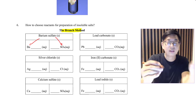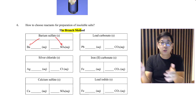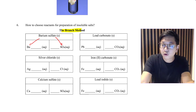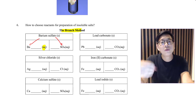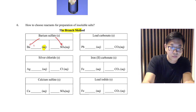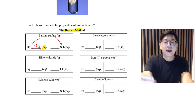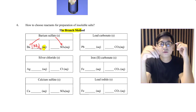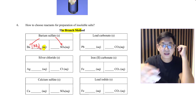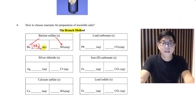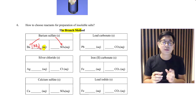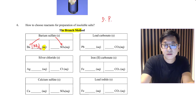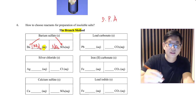For barium sulfate, branch it into 'barium something' and 'something sulfate.' The barium compound must be soluble — because all nitrates are soluble, the easiest option is barium nitrate. For the sulfate, many are soluble — magnesium sulfate, copper sulfate, iron sulfate — but I like to stick to SPA. So I'll go with sodium sulfate.